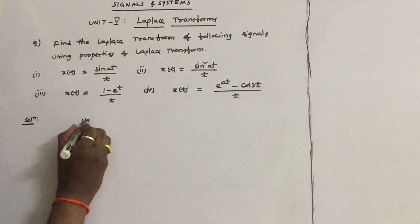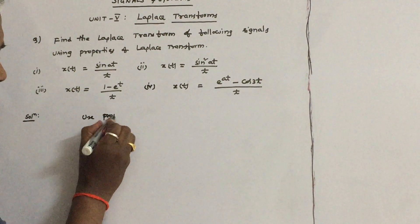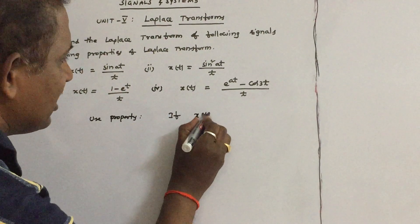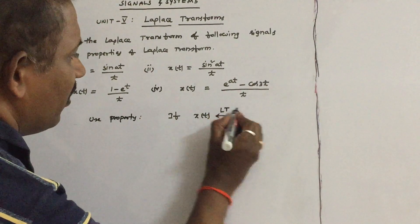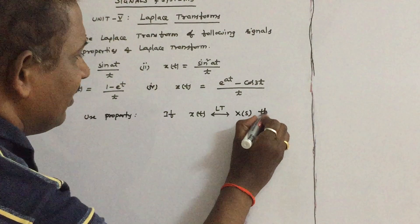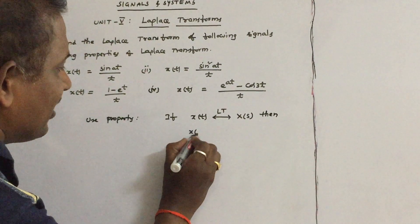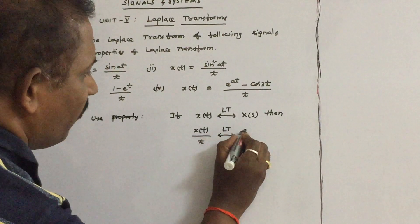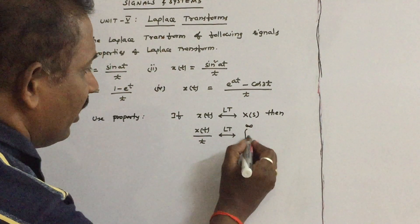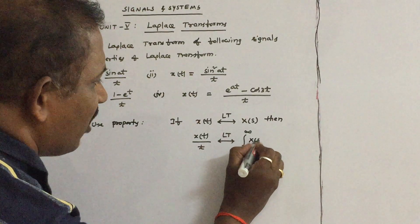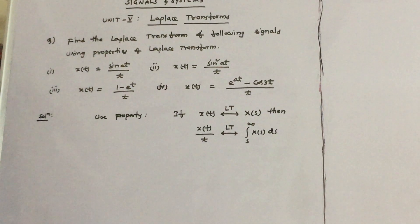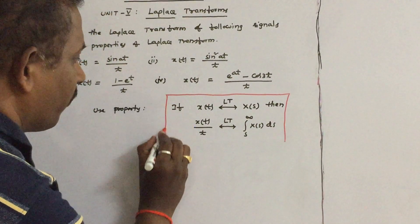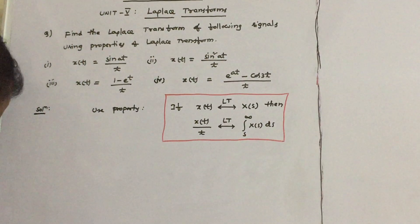Use the property: if X(T) has Laplace transform X(S), then if X(T) is divided by T, we have to integrate X(S) with respect to S, with limits S to infinity — that is, integral from S to infinity of X(S) dS. Use this property to solve the given questions. This is an important model in the examination.